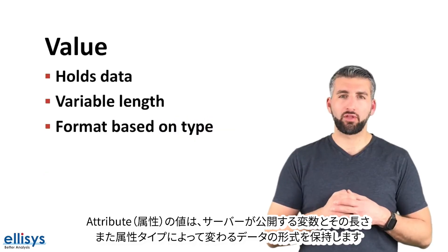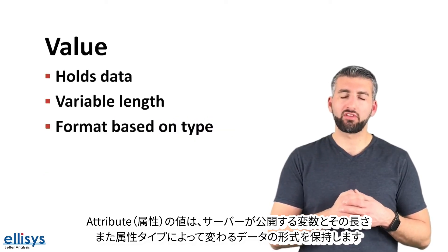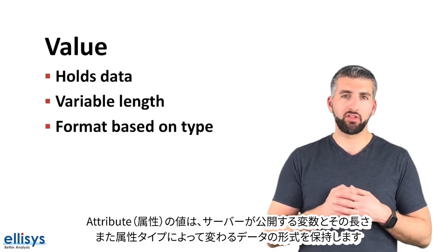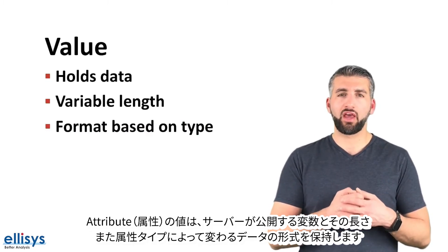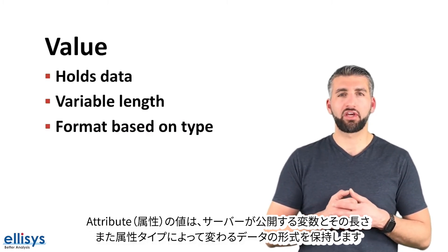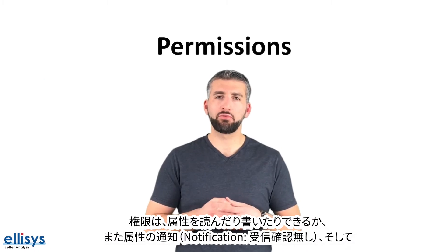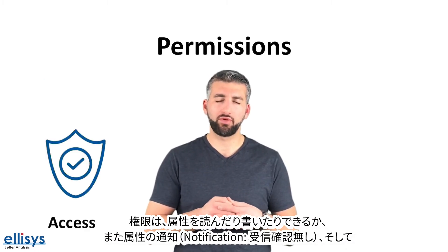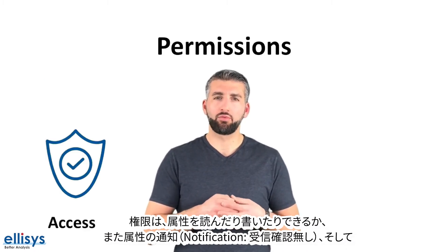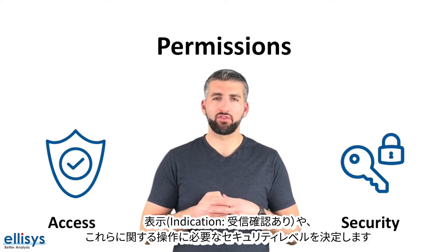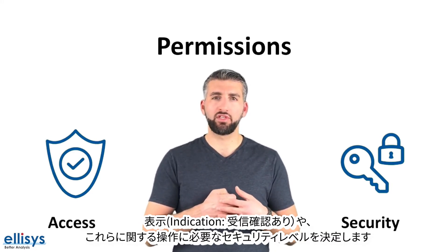The attribute value holds the data that the server wants to expose. It's variable in length and has a format that changes based on the attribute type. Permissions determine whether an attribute can be read or written to, whether it can be notified or indicated, and the security levels that are required for each of these different operations.